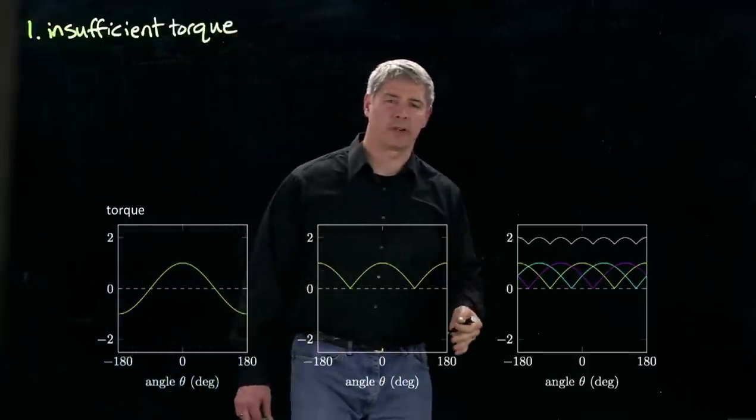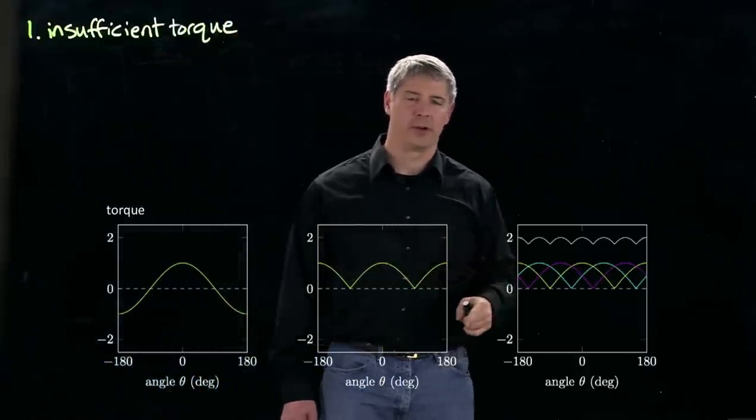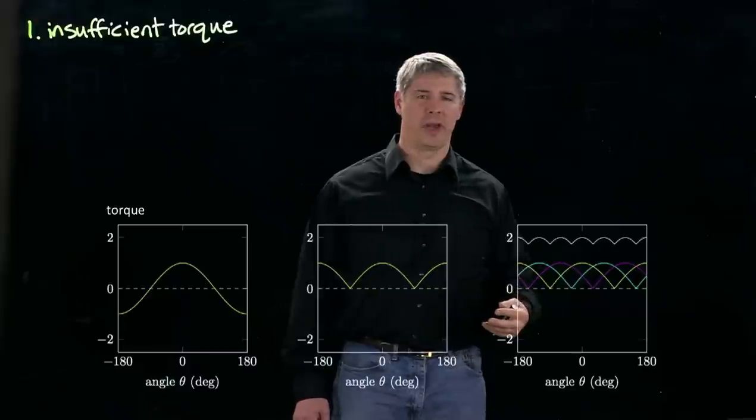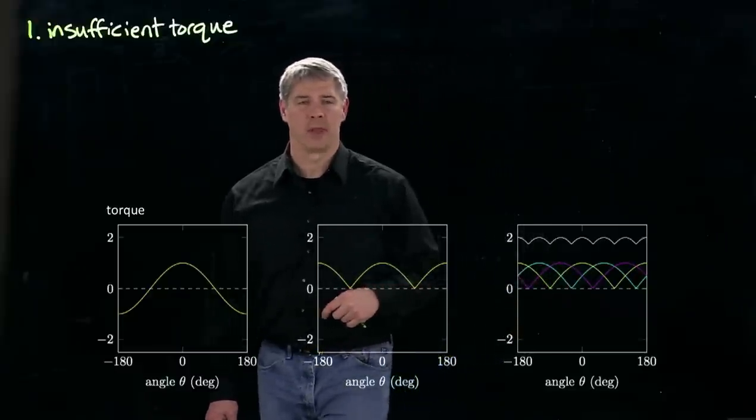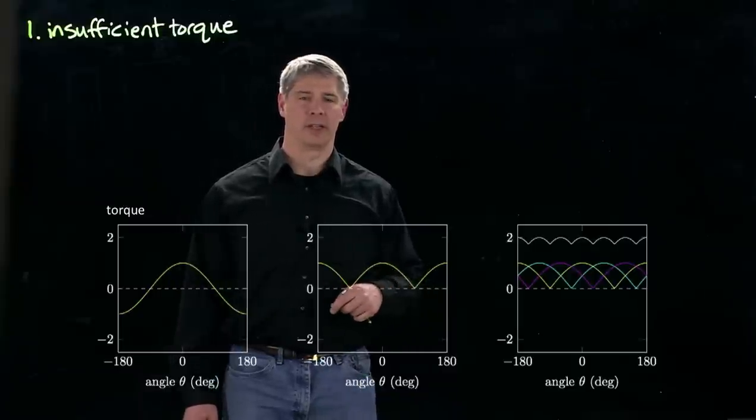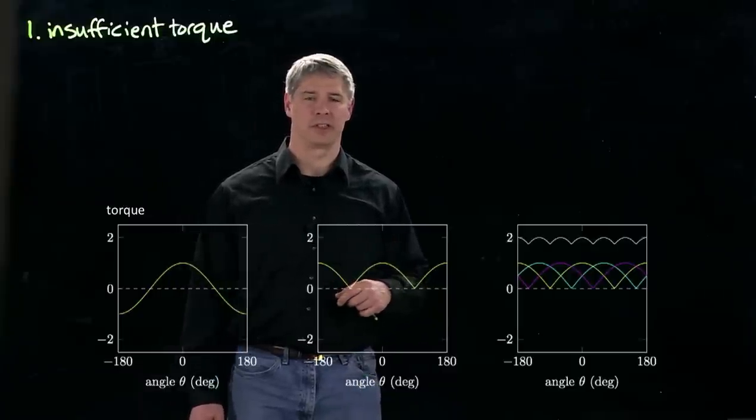One way to increase the torque is to increase the current flowing through the loop. Another way is to increase the magnetic field, use stronger magnets. We saw that from Lorentz's force law. But another way is to increase the length of the loop through the magnetic field, and this is what's used to increase the torque.